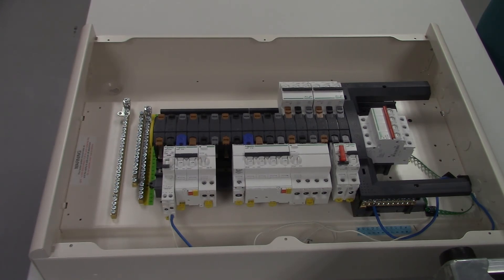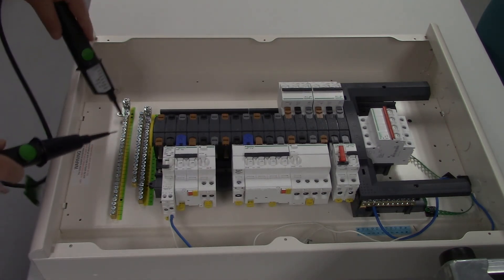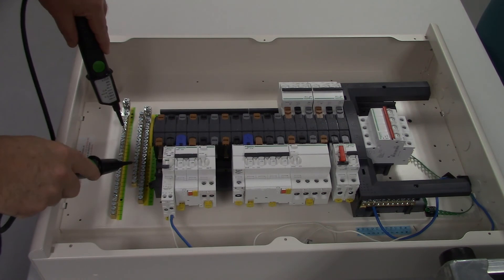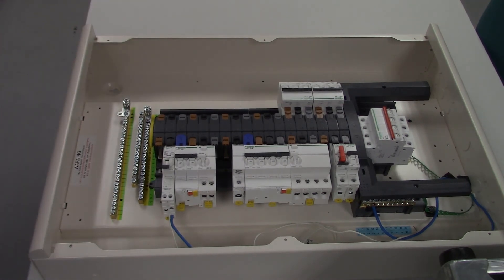Next up is to fit the marker strip so that you can work out what circuit is what. Once the strip's in place, you can do a quick continuity test to ensure that the earth is going to be suitable. Thank you for listening.